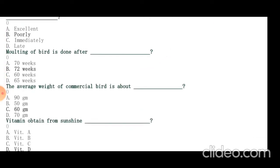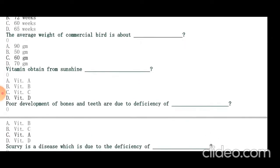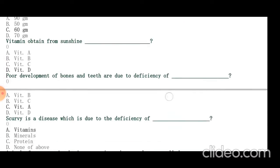Vitamin obtained from sunshine is vitamin D that is linked with melatonin secreted from pineal gland of brain. Poor development of bones and teeth is due to deficiency of vitamin D. Scurvy is a disease due to deficiency of vitamin C.